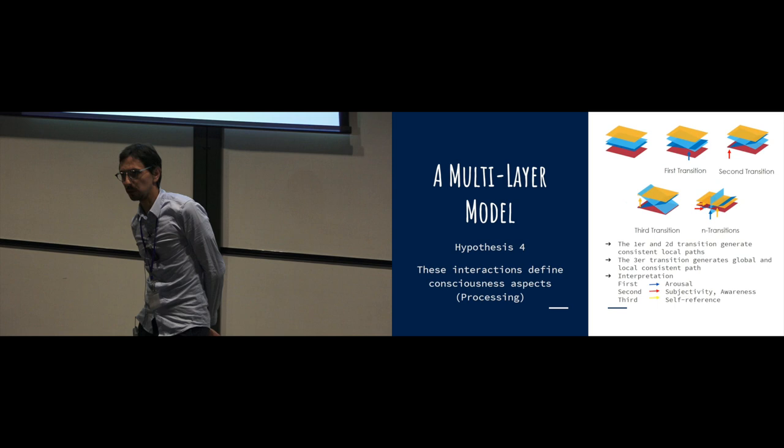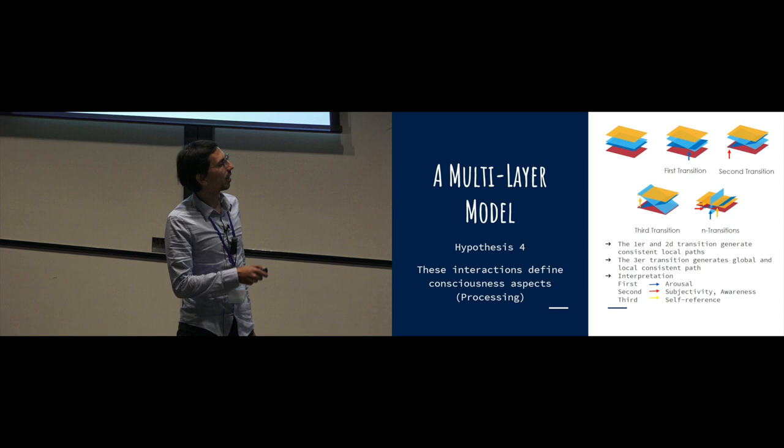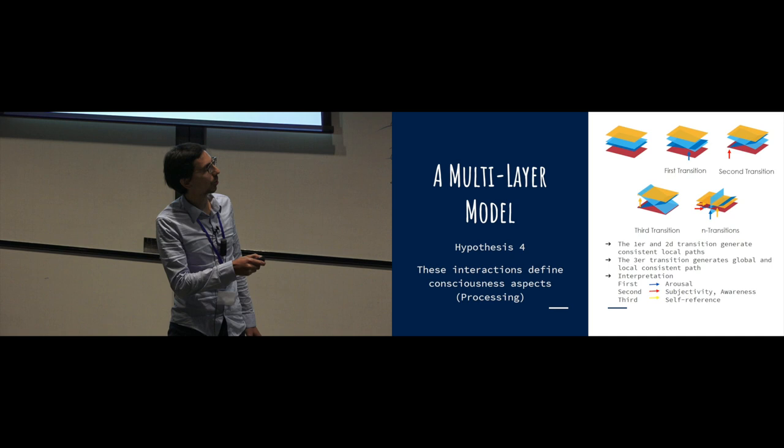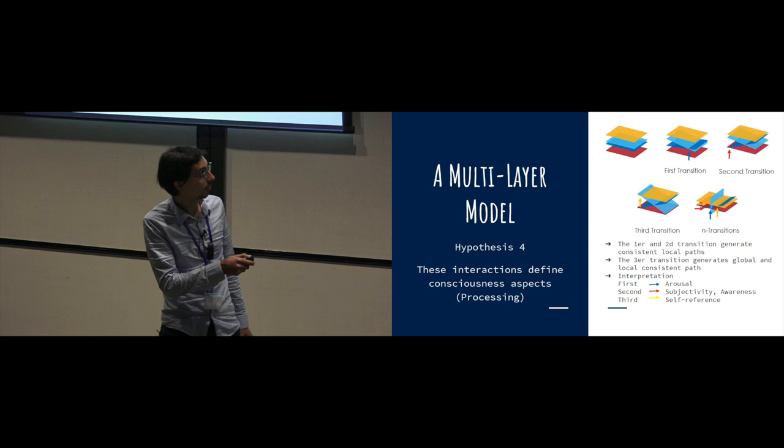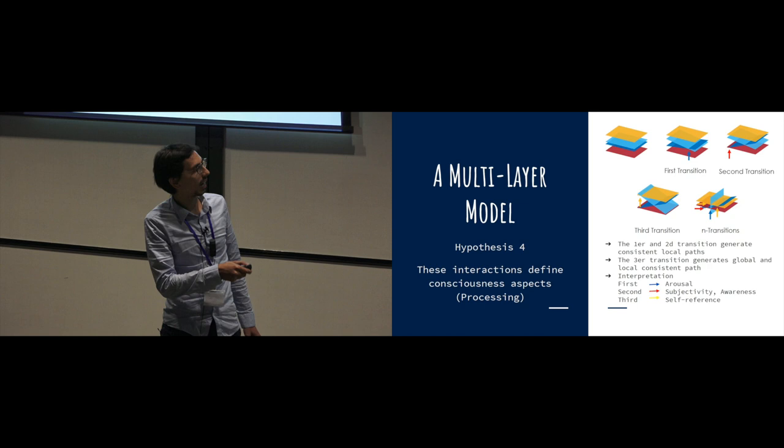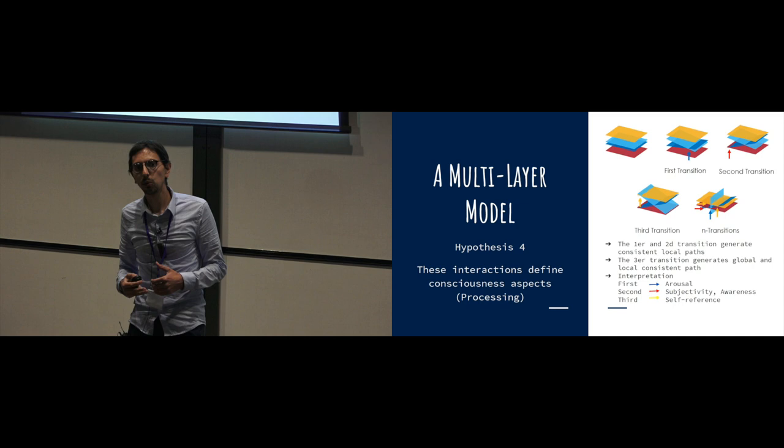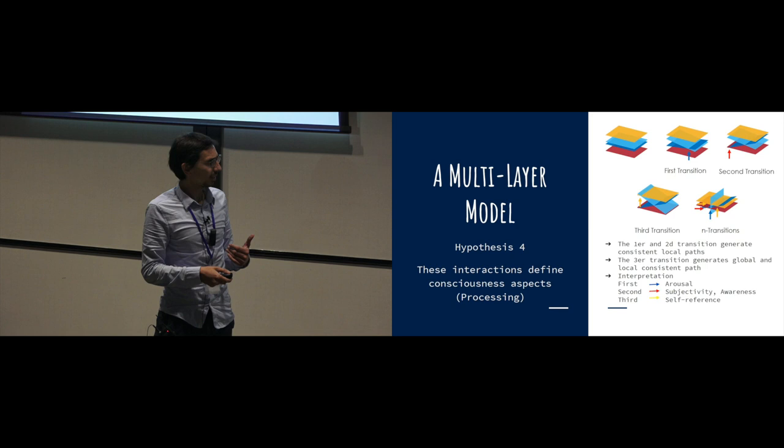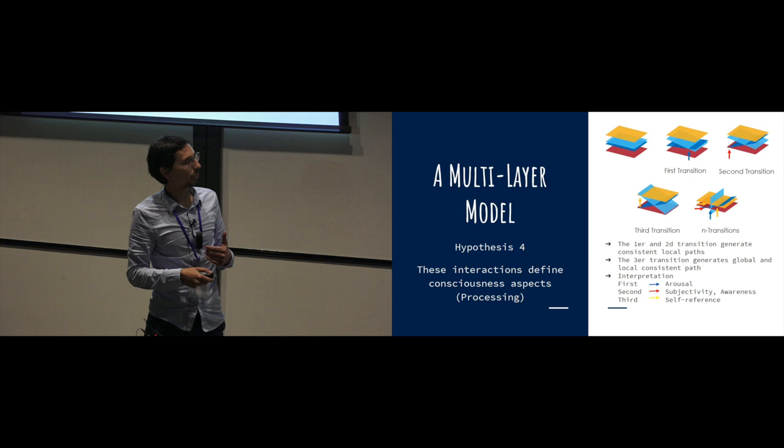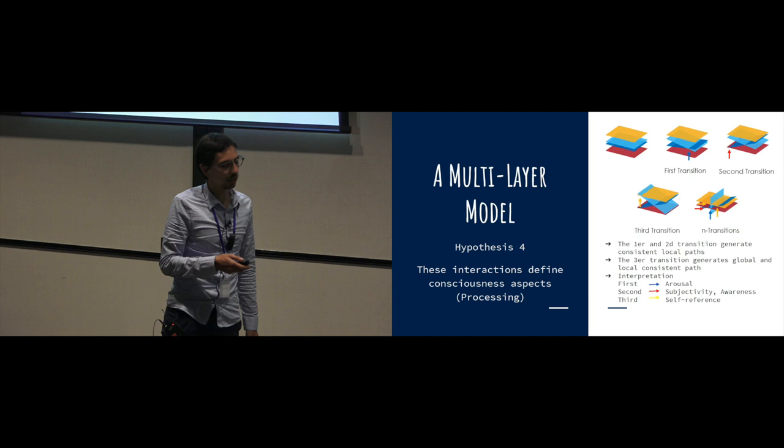The fourth hypothesis, which is connected with consciousness, is that this interaction defines consciousness aspects. For example, here you have the first transition, which starts a new interaction between these two layers, a second transition, third one, and then many others. The point here is, topologically speaking, with the first and second transition, you create local paths between these layers. And the third and next transitions, you start to play with a global topological path. The interpretation is the first transition is related to arousal, the second one to subjectivity and awareness, and the third one to self-reference.